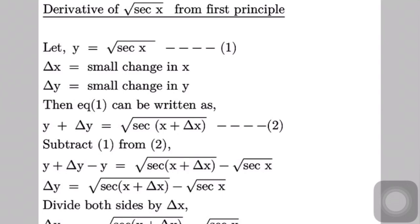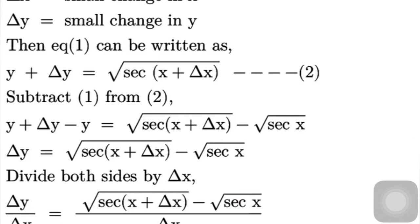y is equal to square root of sec x. Let this be equation 1. Also suppose δx is a small change in the value of x, and δy is a small change in the value of y, and δy occurs due to δx — this means the value of y changes due to the change in value of x. Then equation 1 can be written as: y plus δy is equal to square root of sec(x + δx). Let this be equation 2.